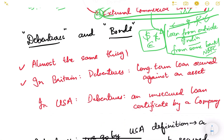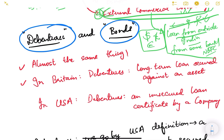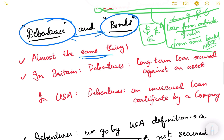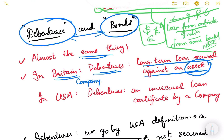What is the difference between debentures and bonds? They are almost the same thing, but there is a difference in terminology rooted in history. In Britain, 'debenture' was the word used for a long-term loan secured against an asset — meaning a company issuing securities to the public with the loan backed by collateral such as land or machinery. So in Britain, debentures were secured loans.